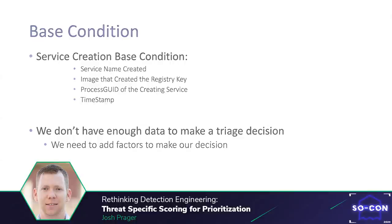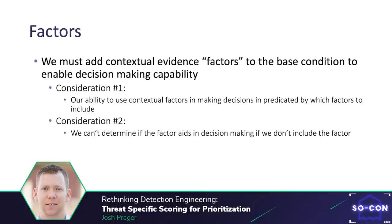So how do we make a triage decision? We must add contextual evidence to the base condition to provide the analyst a composite event enabling benign or malicious decision-making capability. We need to add factors, but we don't know what context to add — it's a chicken-before-the-egg scenario. So how do we identify which factors to include, and how do we validate that these factors are actually aiding us in decision-making?